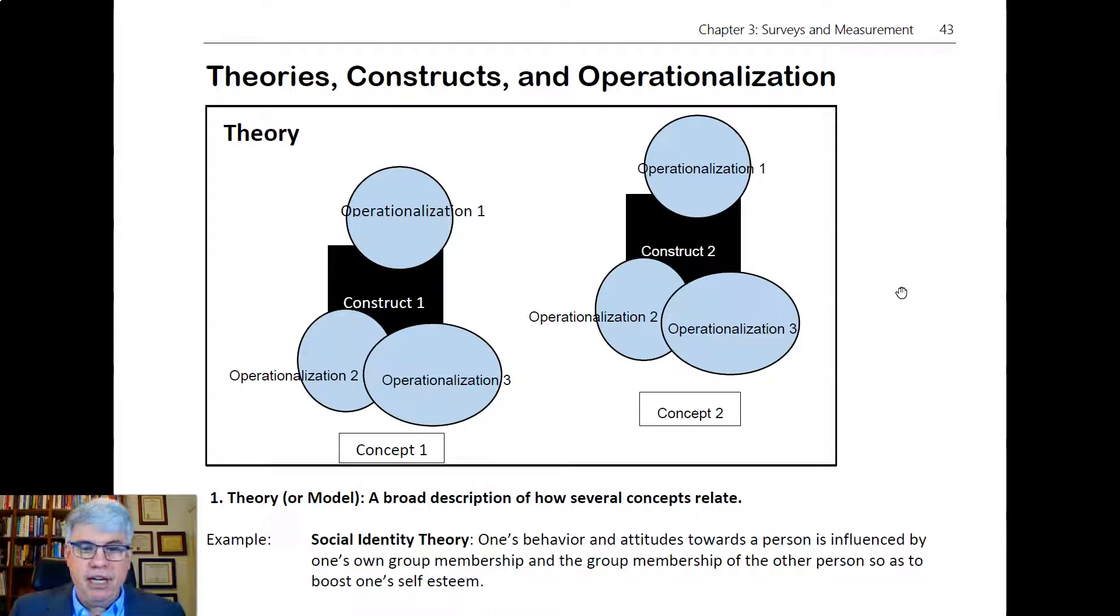A good example of a theory that is quite useful is social identity theory. Social identity theory says that one's behaviors and attitudes towards a person is influenced by one's own group membership. So the way that I think of a person is not just based on who they are and their personality and my personality.